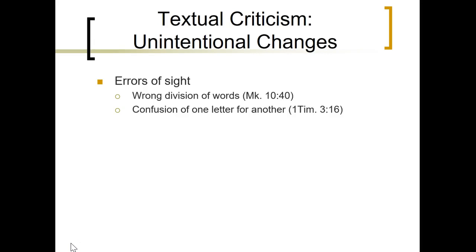An omicron-sigma, transliterated as 'os,' means 'whoever' or 'whom.' But if it's seen as theta-sigma, a scribe might think it's a contraction for theos — God. So in 1 Timothy 3:16, a scribe might read the text as God being manifested rather than 'who was manifested.' This creates a significant theological difference — whether Paul is claiming Jesus was God manifest in the flesh, versus simply that Christ was manifested in the flesh.